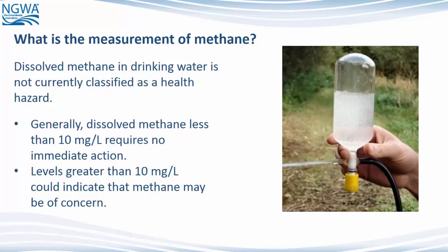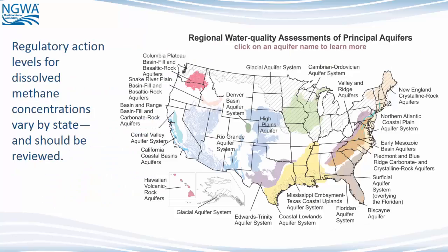What is the measurement of methane? Dissolved methane in drinking water is not currently classified as a health hazard. Generally, dissolved methane less than 10 milligrams per liter requires no immediate action. Levels greater than 10 milligrams per liter could indicate that methane may be of concern. Regulatory action levels for dissolved methane concentrations vary by state and should be reviewed.